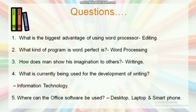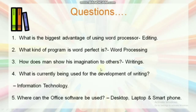Continuing questions: What is the biggest advantage of using a word processor? Answer: Editing. What kind of program is WordPerfect? Answer: Word processing. How does a person show his imagination to others? Answer: Writing. What is currently being used for the development of writing? Answer: Information Technology. Where can office software be used? Answer: Desktop, laptop, and smartphone.